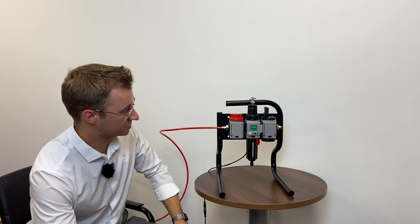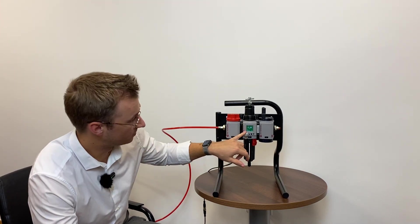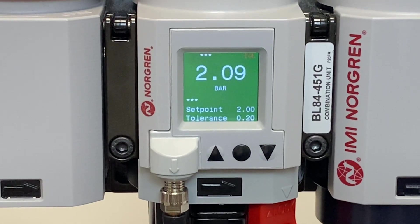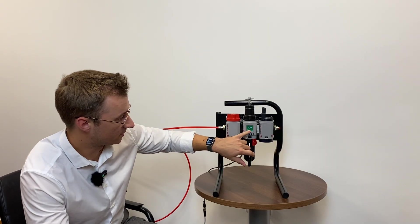As you can see now, we've got some pressure running through the system. So I've set the set point to 2 bar and the tolerance to 0.2 of a bar. Right now we've got just over 2 bar running through, so the screen is showing green.